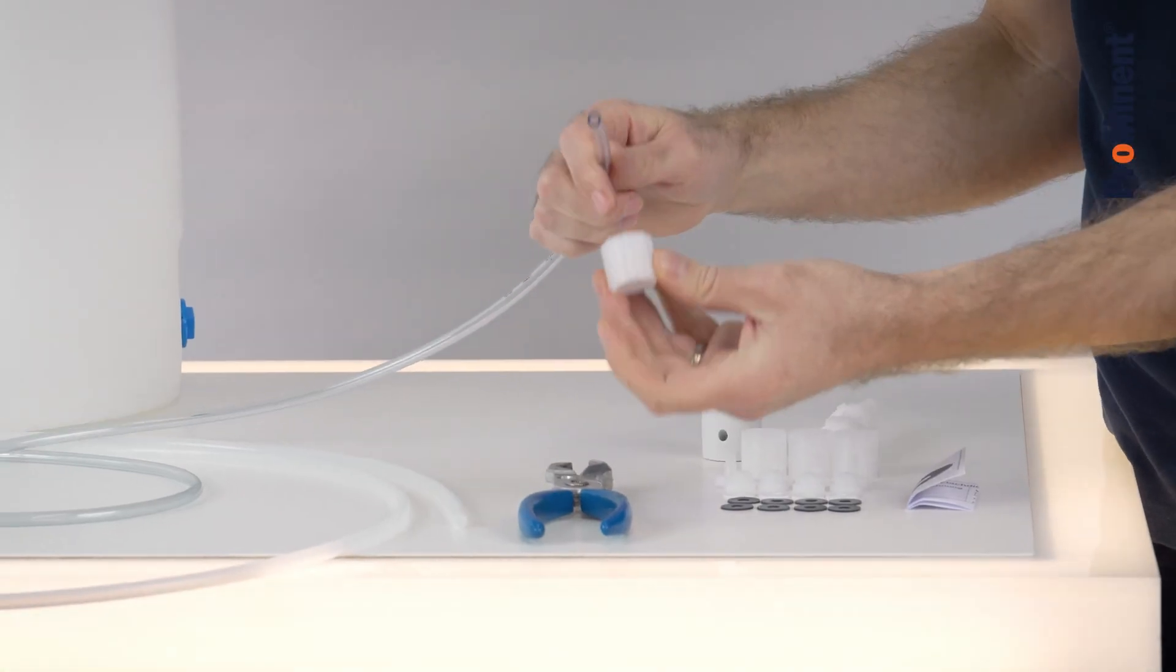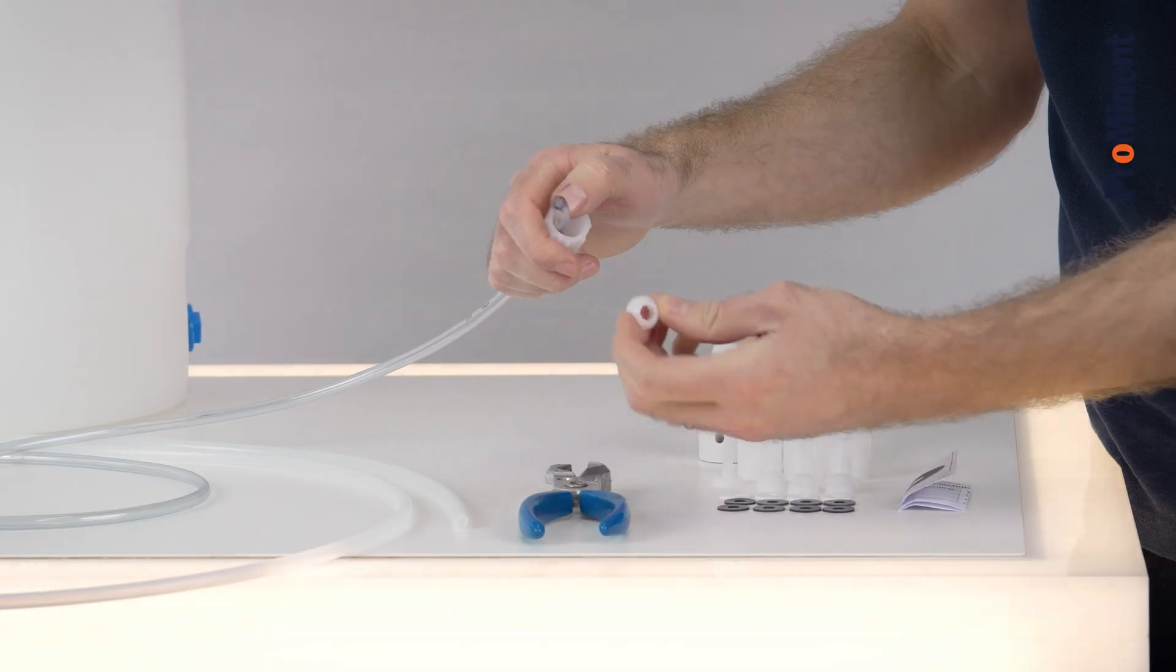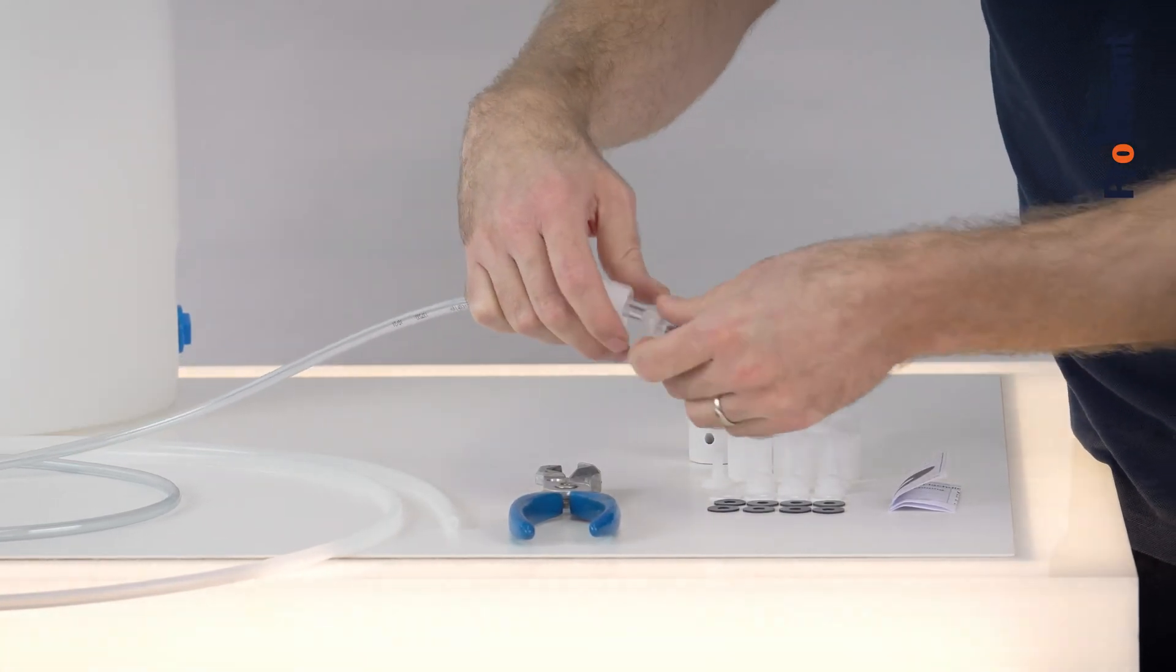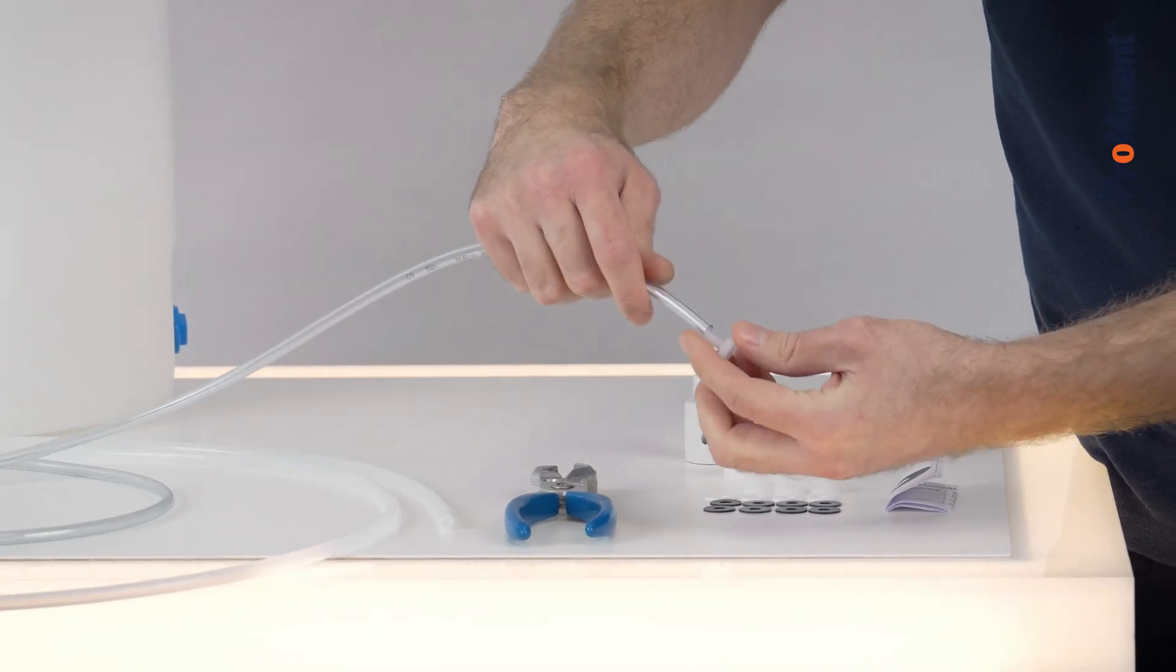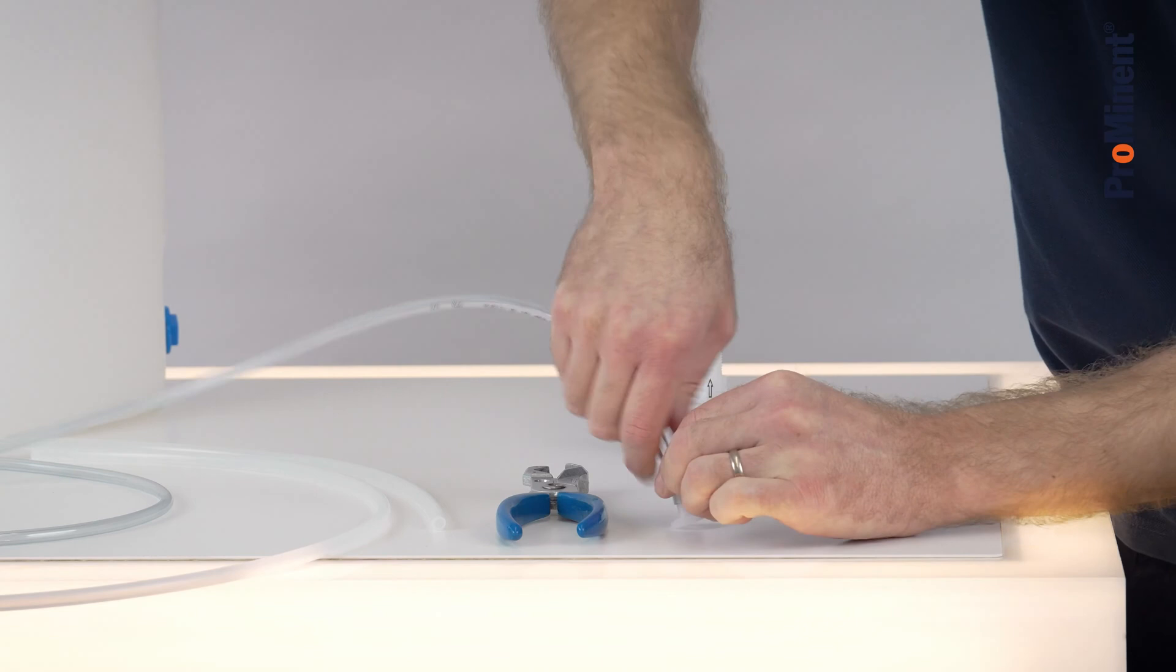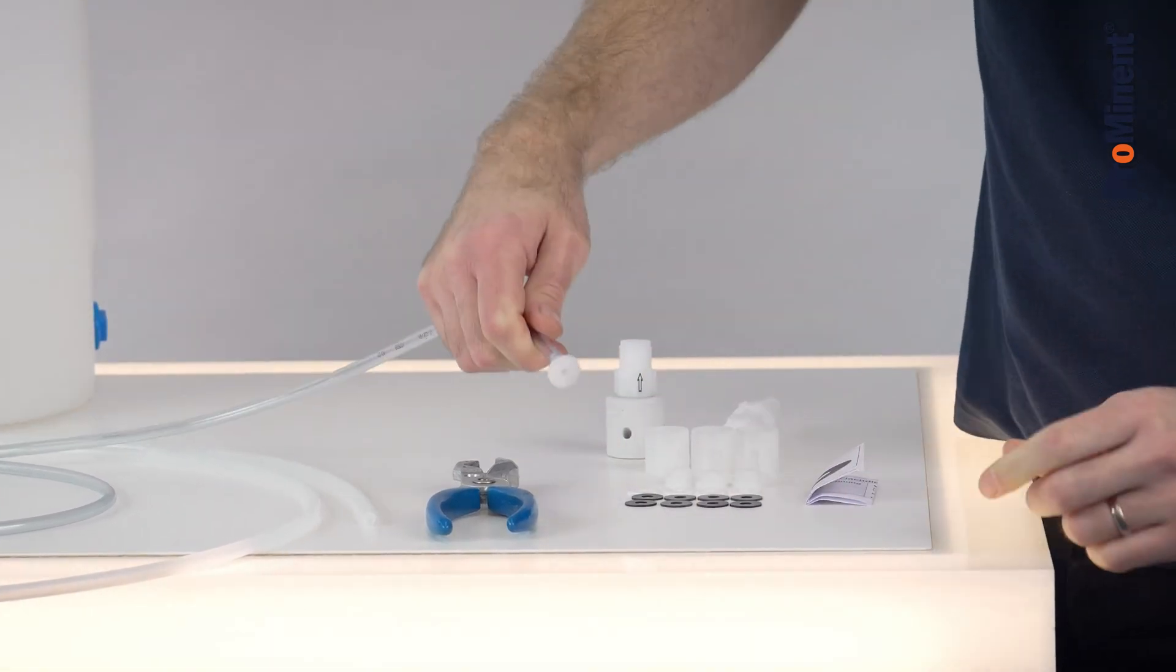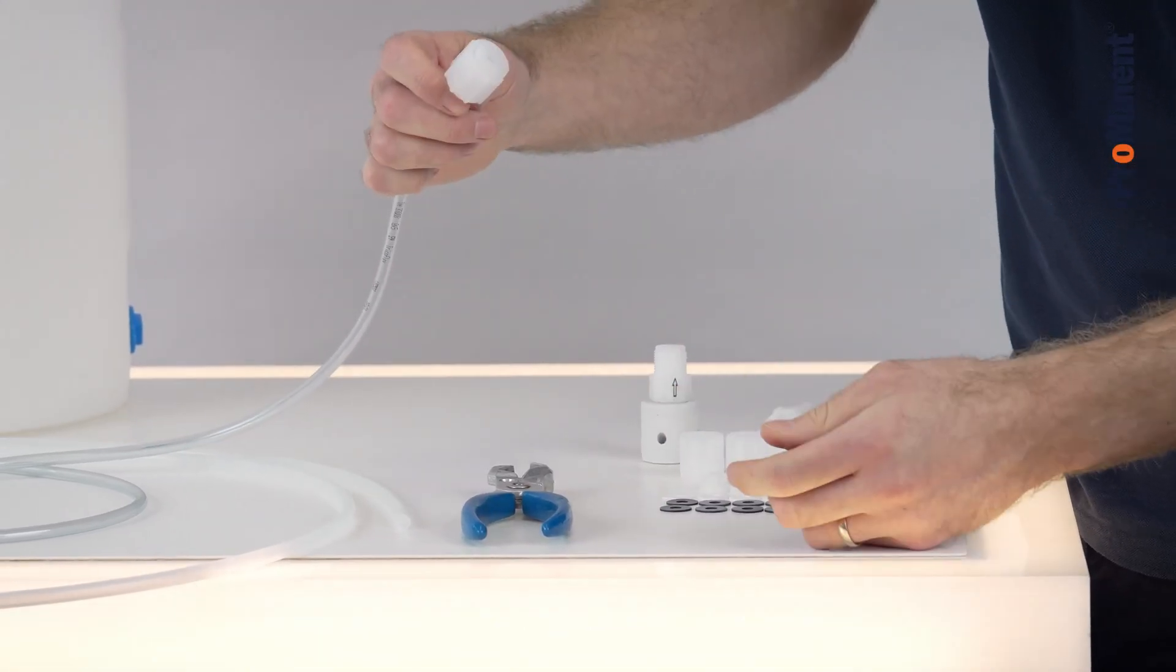We use the union nut, then the clamp ring, and at the end we use the nozzle. Put it in and then press it in properly. You can use the table to push it in properly. This is now for the suction side.